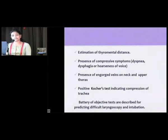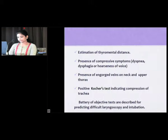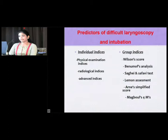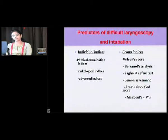There are a number of objective tests described for predicting difficult laryngoscopy and intubation. Among these, predictors of difficult laryngoscopy and intubation include individual indices — physical examination indices, radiological indices, and advanced indices — as well as group indices, which are named indices involving a collection of individual indices grouped together with a scoring system.